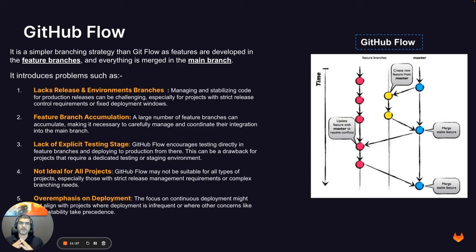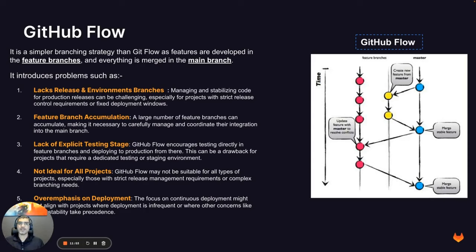The next branching strategy is GitHub Flow, which is a much simpler strategy than Git Flow. All features are developed in feature branches and then everything is merged into the main branch. It's straightforward: one main branch, features developed in feature branches, everything merged and tested against main. Whenever you want to create a release, you just create a tag from there and deploy to production.